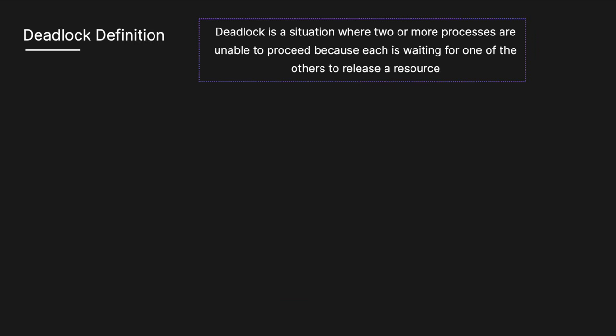So what actually is deadlock? Deadlock is a situation in an operating system where two or more processes are unable to proceed because each is waiting for one of the others to release a resource — and that resource could be memory, it could be files, it could be printers.